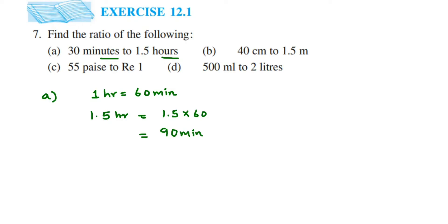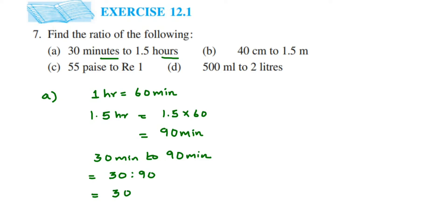So the ratio is 30 minutes to 1.5 hours, which becomes 30 minutes to 90 minutes. Now we can find out the ratio. We do not write units in the ratio, so this will become 30 is to 90. Now reduce it by converting to a fraction: 30 by 90. Cancel the zeros, then cancel 3 and 9 — 3 threes are 9 — so we get 1 by 3. Converting back to ratio form, the answer is 1 is to 3.